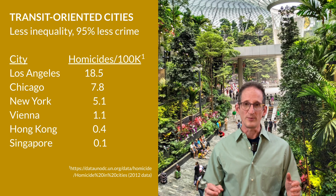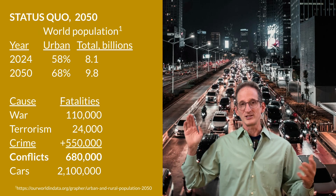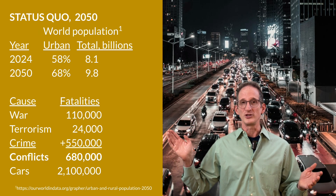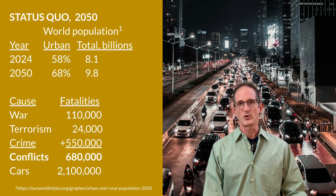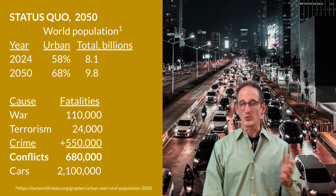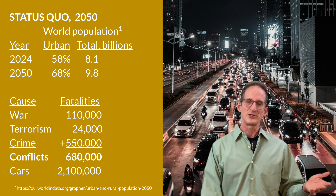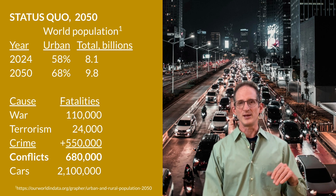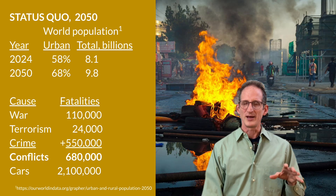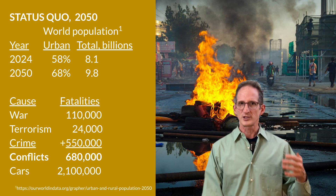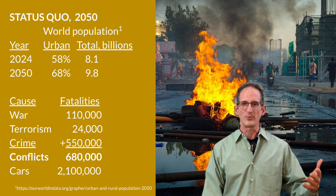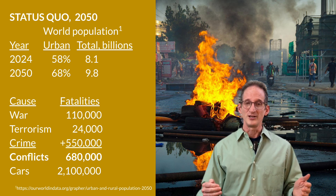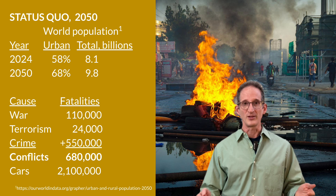Let's take these concepts and really run with them. Here's what the world will look like if present trends continue with no action — as far in the future as I was able to find data, that would be 2050. This is a world population that has grown from 8.1 billion to 9.8 billion, and from 58% urban to 68%. If nothing changes about how cities are designed, we would expect to lose more lives to war, terrorism, and crime — simply because there are more people and more people are in cities.